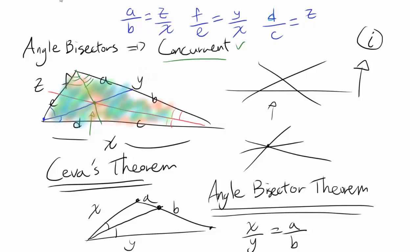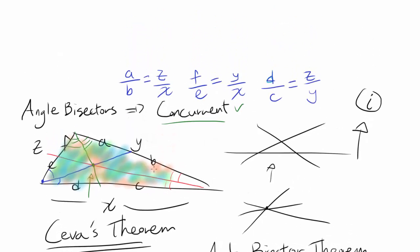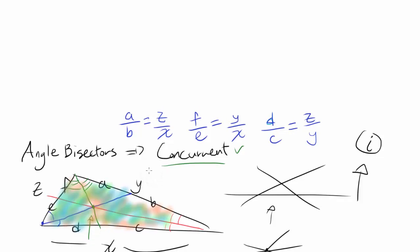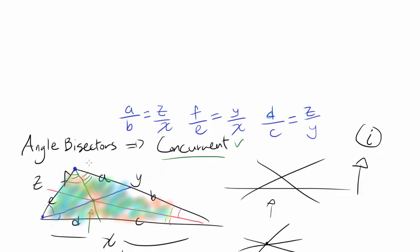Okay, so we have a lot of ratios going on. And now let's apply Ceva's theorem. Ceva's theorem tells you, you start at some vertex. Let's start at this vertex. And let's go around this way. Let's go around following this arrow.